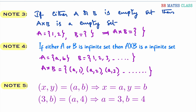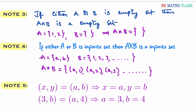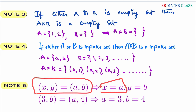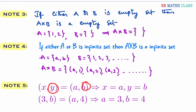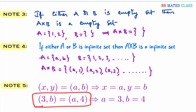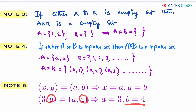The next important note point: if two ordered pairs are equal, it indicates that the corresponding coordinates are equal. So if (x, y) = (a, b), we can conclude that x = a and y = b. For example, if (a, b) = (3, 4), then a = 3 and b = 4.